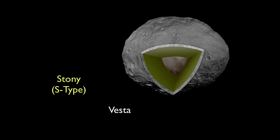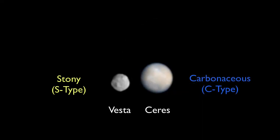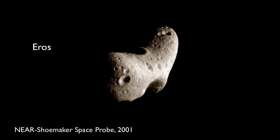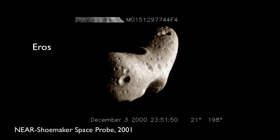These stony type asteroids, or S-type as they're called, are most common within the inner reaches of the asteroid belt. Asteroids that come close to Earth tend to be of this type, which has some people wondering about the possibility of mining these asteroids for their metal resources. Here's another S-type asteroid, Eros, which was the first to be visited by a space probe — that was the NEAR Shoemaker probe in 2001.